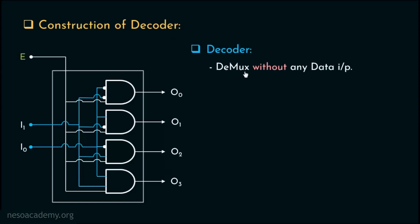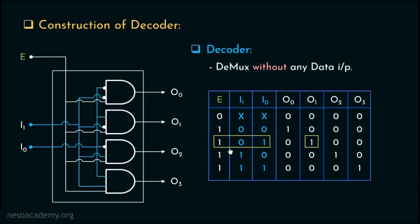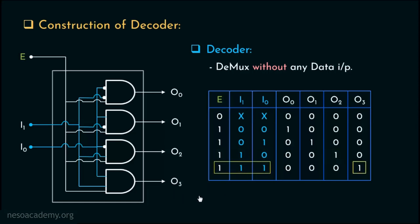We deduced that the decoder is basically the demultiplexer without any data input. Now let's reconsider the actual truth table of this particular decoder circuit for a moment. O0 produces 1 for the entire sequence 1, 0, 0 — that is, E is 1 and I1 and I0 are 0's. Similarly, O1 produces 1 for the sequence 1, 0, 1 — that is, E is 1, I1 is 0 and I0 is 1. For O2 to be activated, we need the sequence 1, 1, 0 — E is 1, I1 is 1 and I0 is 0. Finally, O3 generates 1 for the sequence 1, 1, 1 — E, I1 and I0 are all 1's.